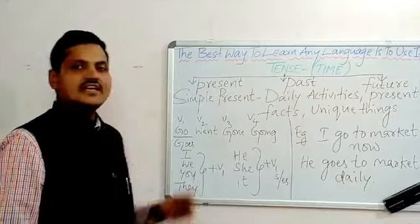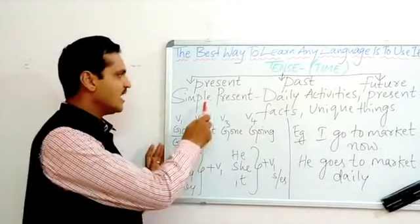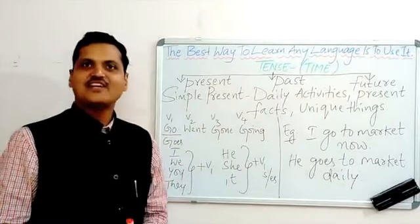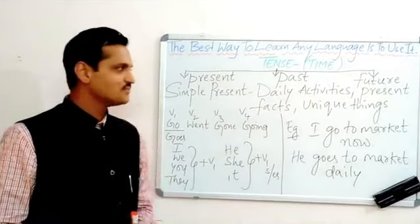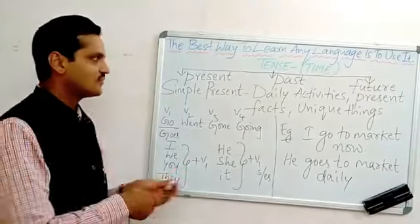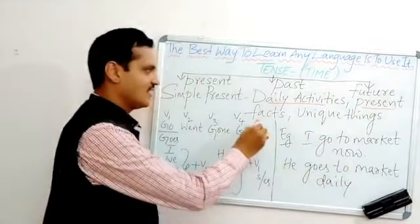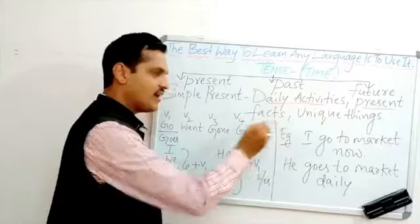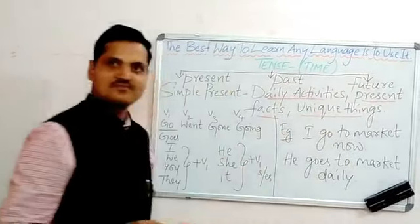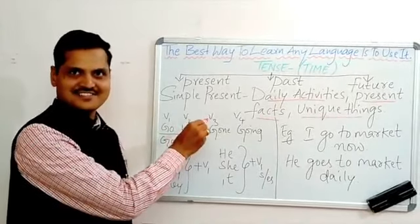In present tense, we have 4 modules. Today I'm going to deal with simple present. Simple present — we use it daily. We use it for daily activities, present activities, universal facts, and unique things. For this purpose, we use simple present.